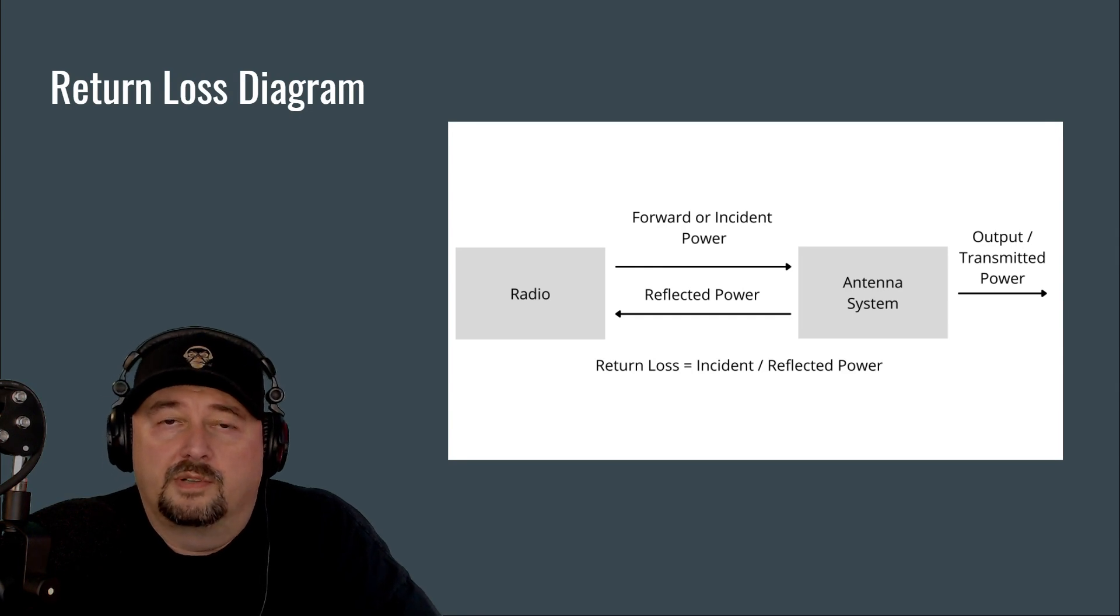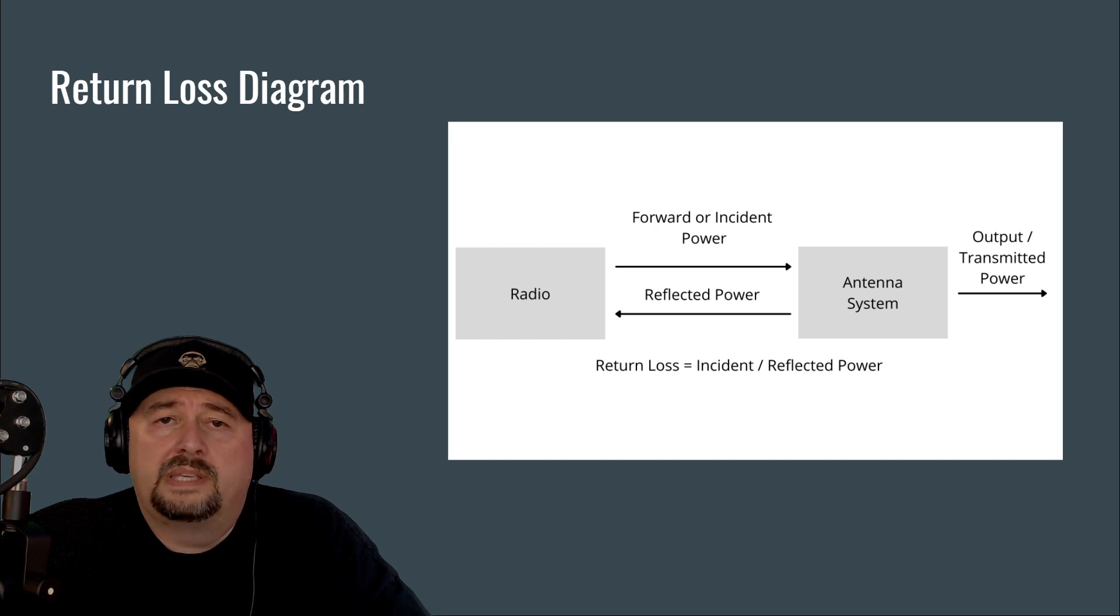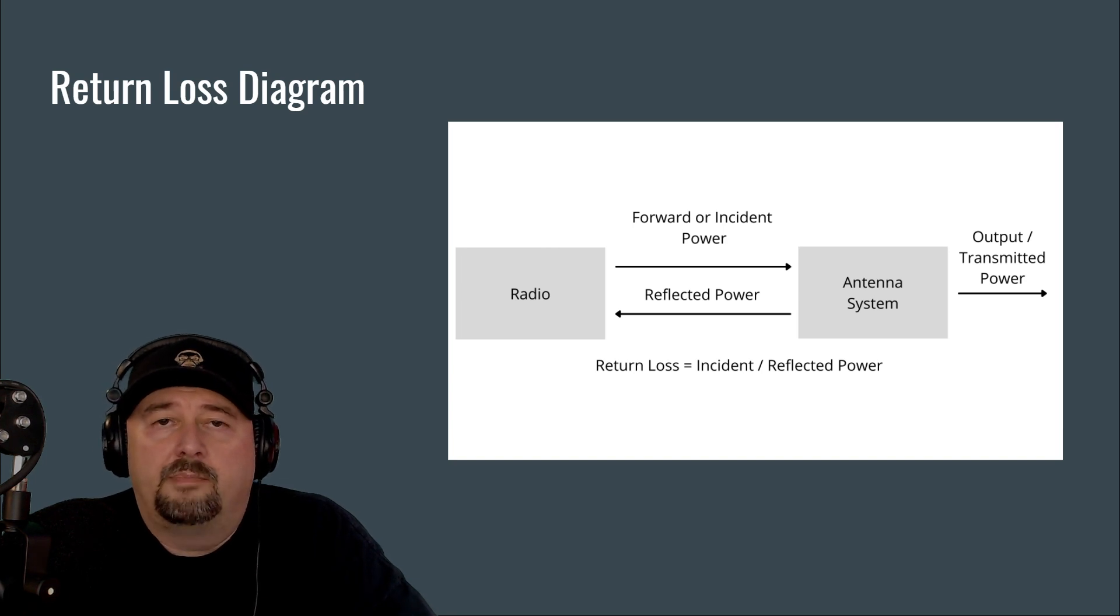Using my art skills, I put together this return loss diagram. And if you take a look at it, moving from left to right, you'll see a radio all the way to your output or your transmitted power. So your radio emits a signal, and we call this the forward or incident power. It goes into your antenna system. Now, your antenna system consists of your coaxial cable or transmission line, as well as your antenna. And then you have your output or your transmitted power. And this is what makes it out of your antenna. When signals go into your antenna system, some of that signal is reflected back. That is referred to as reflected power. That shouldn't be a surprise. And when we talk about return loss, it is the incident or forward power divided by your reflected power. And that's how you derive return loss.